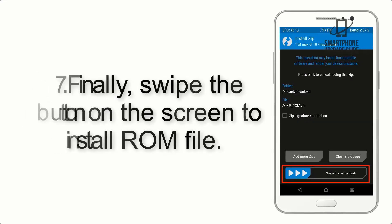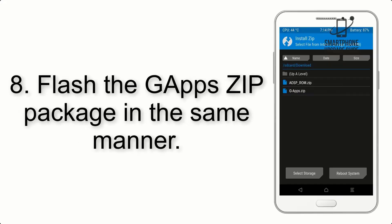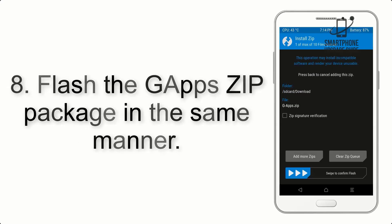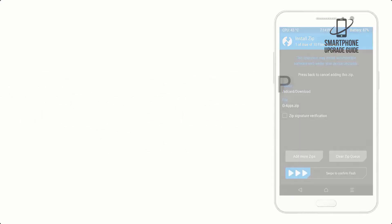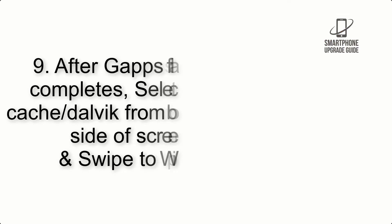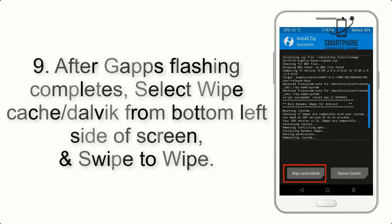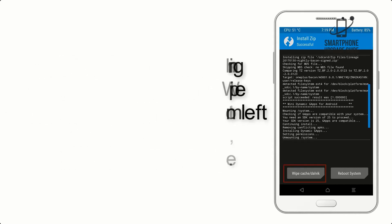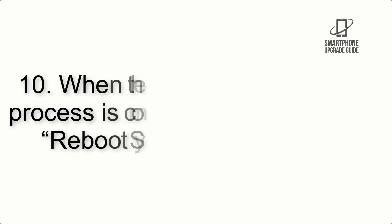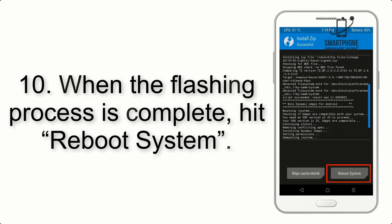Step 8: Flash the GApps zip package in the same manner. Step 9: After GApps flashing completes, select Wipe Cache and Dalvik from the bottom left side of the screen and swipe to wipe. Step 10: When the flashing process is complete, hit Reboot System.